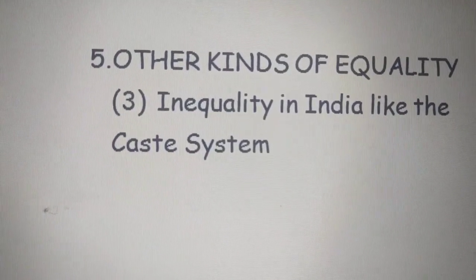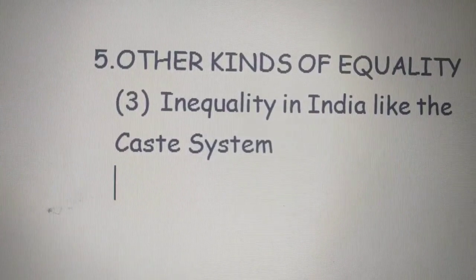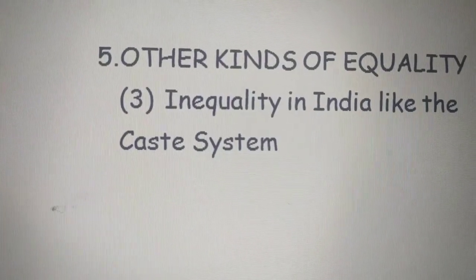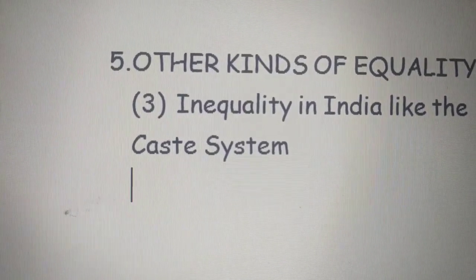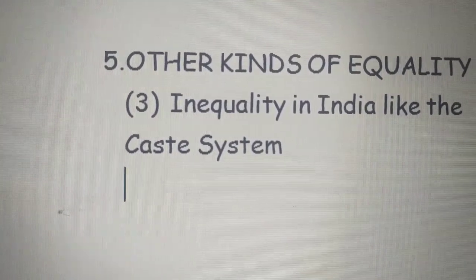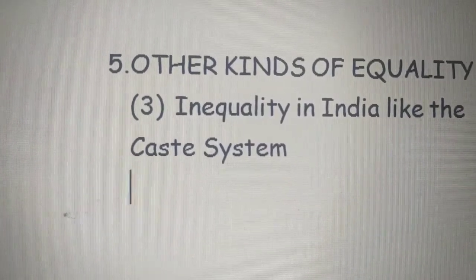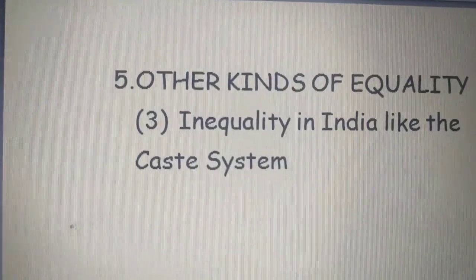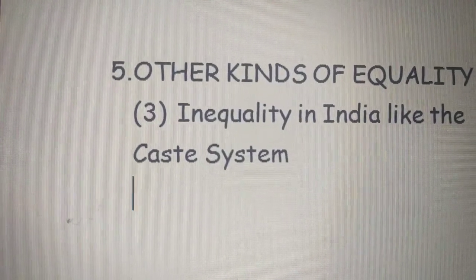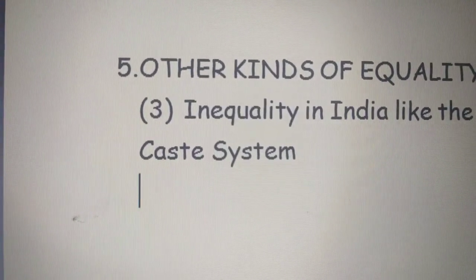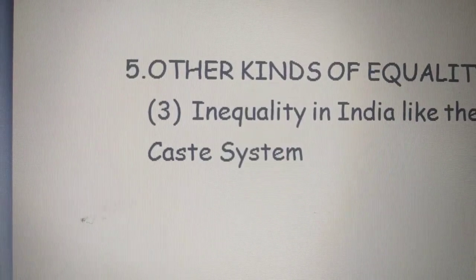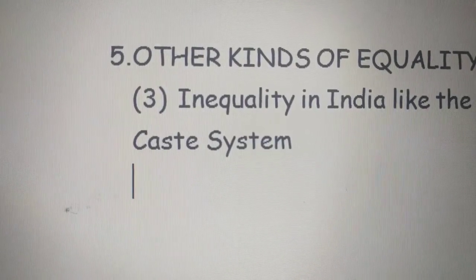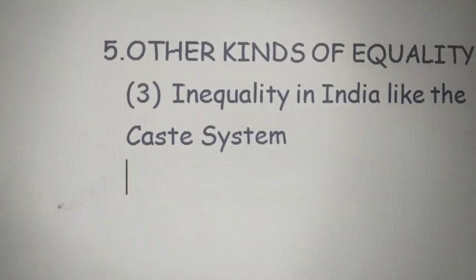There are other inequalities that exist — that is, the caste system. You must have also studied about this in history in class 6th. There are four classes: the Brahmans, who were the teachers; the Kshatriyas, who were the warriors; then there were Vaishyas, who were merchants and traders; and lastly, there were Shudras, who used to do menial work or get jobs done for the other three classes.